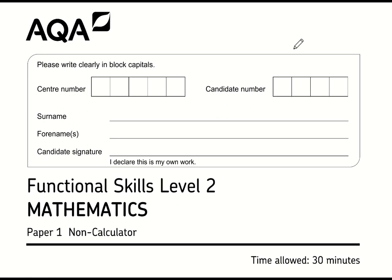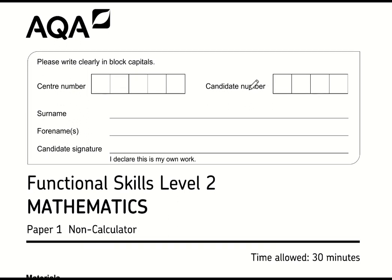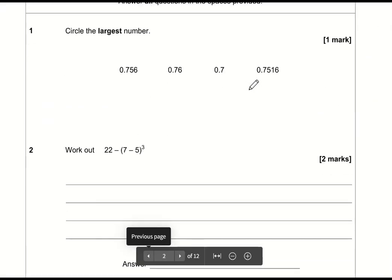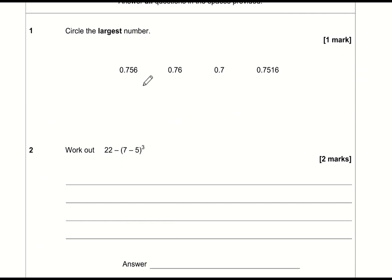Here are the video solutions for AQA Functional Skills Level 2 Maths, this is Paper 1 which is non-calculator. Let's take a look at Question 1: circle the largest number. This could cause a little bit of difficulty because they are decimals of different lengths.